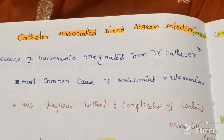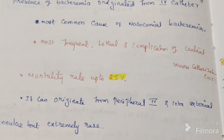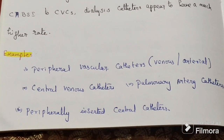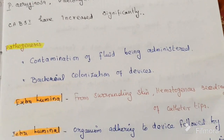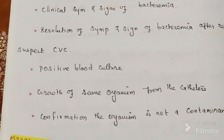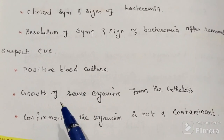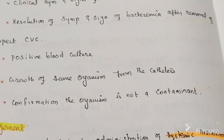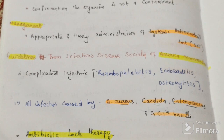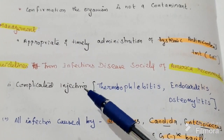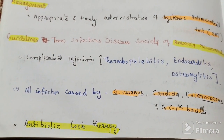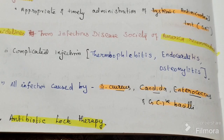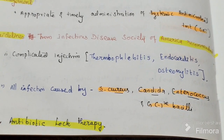In summary, catheter-associated bloodstream infection has a mortality rate of 25%. Key topics covered include device types, causative organisms, pathogenesis, diagnosis — where positive blood culture and growth of the same organism from the catheter are the gold standard — and management following Infectious Disease Society of America guidelines, including antibiotic lock therapy.